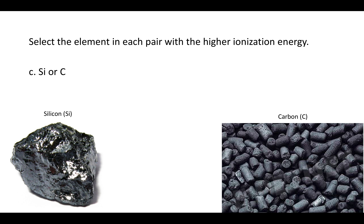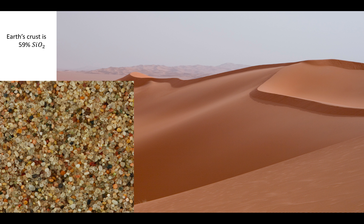How about silicon or carbon? Which one has a higher ionization energy? Let's take a moment — silicon is one of the most abundant elements on Earth. It is part of sand.